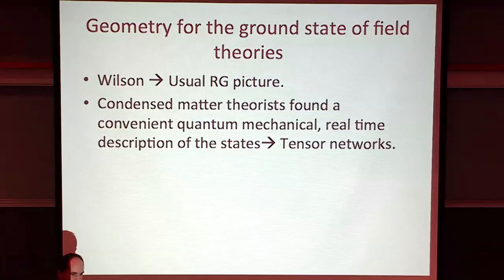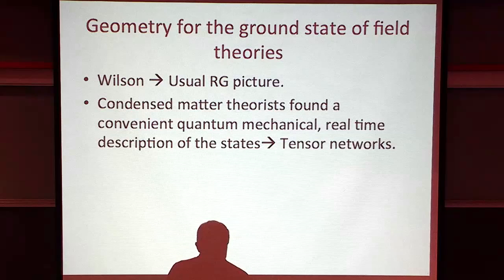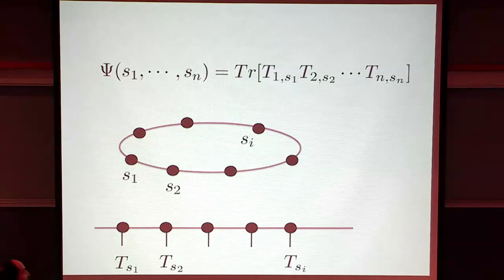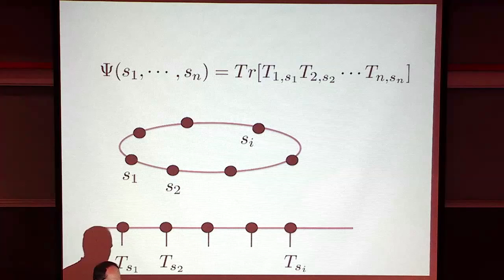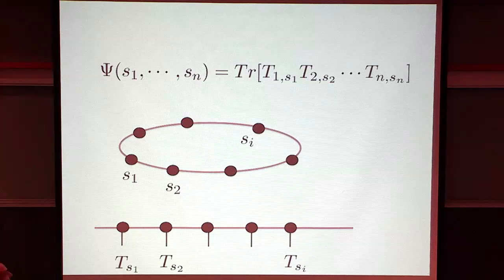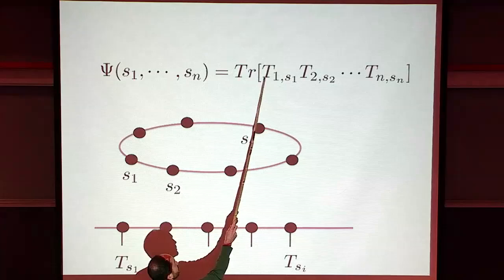I'd like to review some things that condensed matter theorists did to understand this Wilsonian description of the ground states. These have a lot of similarity to how the geometry emerges. This goes by the name of tensor networks. The simplest example: consider a spin chain with spins plus or minus a half. There is some Hamiltonian, and we're trying to describe the ground state. The wave function can be written as a trace of a bunch of tensors - n tensors, these are D-by-D dimensional matrices.